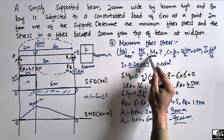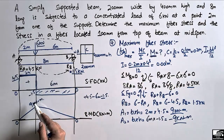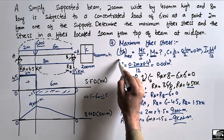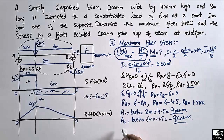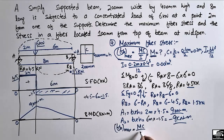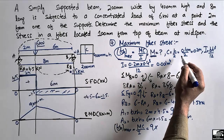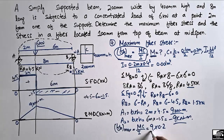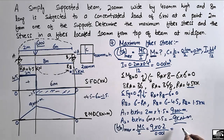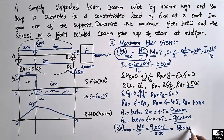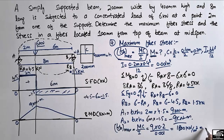The only unknown M is now found: M equals 9 kilonewton meter. Substituting into the formula, maximum fiber stress equals M·c over I: 9 multiplied by 0.2 divided by 0.001 equals 1800 kilonewton per square meter, or 1.8 megapascal. These are the maximum bending stresses in this beam.